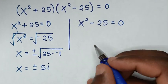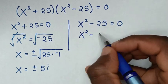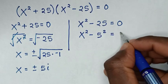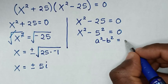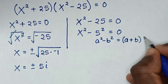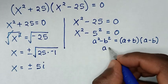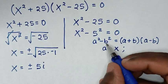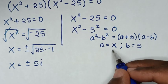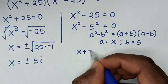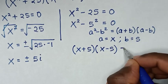For the second solution, x squared minus 25 equals 0, we write 25 as 5 squared and apply the difference of squares rule again: a squared minus b squared equals (a plus b)(a minus b). Comparing, a equals x and b equals 5, so it factors as (x plus 5)(x minus 5) equals 0.